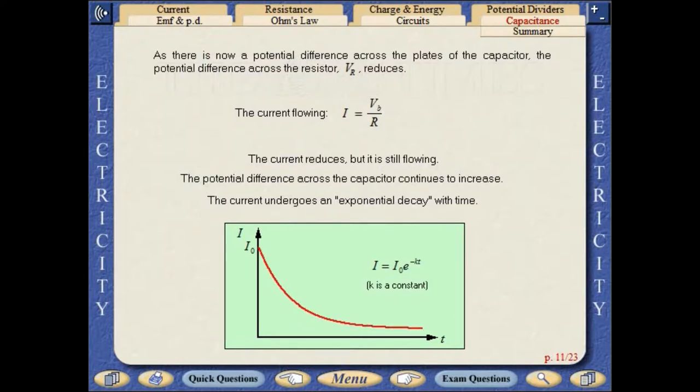As there is now a potential difference across the plates of the capacitor, the potential difference across the resistor VR reduces. The current flowing I equals VR over R. The current reduces, but it is still flowing.